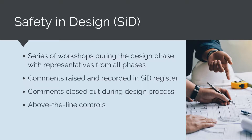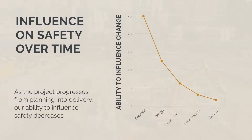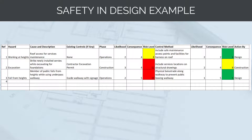As a minimum, above-the-line controls are needed to address comments, so an engineering control or higher must be in place. In Australia, like having SWMS for key construction activities, the safety and design process is a legislative requirement. An important concept is that our ability to influence safety decreases as the project progresses through its stages. It is much easier to eliminate a working-at-height hazard during planning than once construction has begun. For this reason, the safety and design process is an incredibly effective tool for eliminating and substituting hazards when it is easy to integrate change.